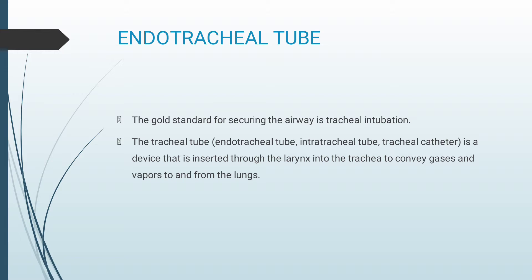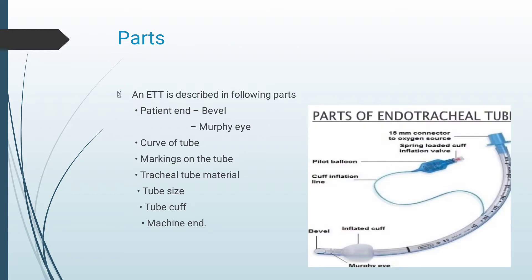Moving on to the next airway equipment — the endotracheal tube. The gold standard for securing the airway is tracheal intubation. The tracheal tube, endotracheal tube, or intratracheal tube is the device inserted through the larynx into the trachea to convey gases and vapors to and from the lung. An ETT is described by the following parts: patient end has a bevel and a Murphy's eye, the curve of the tube, the markings on the tube, tracheal tube material, tube size, tube cuff, and the machine end. The image shows an inflated cuff, and the Murphy's eye and bevel end can be seen at the patient end of the tube.